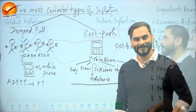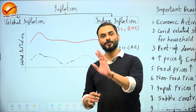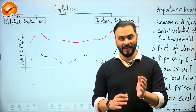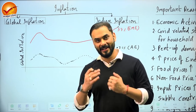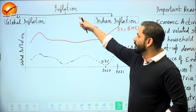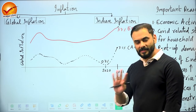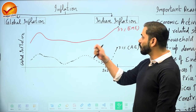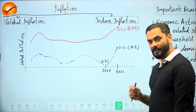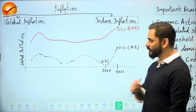So there are two basic types of factors which lead to inflation: first is demand-pull, and second is cost-push. Anything which increases demand in the economy very aggressively leads to demand-pull inflation. Anything which leads to increase in cost of production leads to cost-push inflation. Now let's look at the general trend of global inflation as well as Indian inflation.